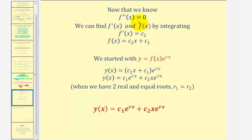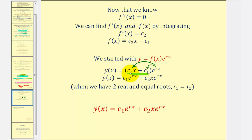Now if f double prime equals zero, we can find f prime and f by integrating. If the second derivative is zero, that means the first derivative must be a constant, which we'll call c₂. And now if we integrate a constant to obtain our function f, we would have c₂ times x plus a constant, which we'll call c₁. Remember, we started with y equals f of x times e raised to the power of rx. So now we'll substitute c₂ times x plus c₁ for f of x. Distributing gives us c₁ times e to the power of rx, plus c₂ times x times e to the power of rx.